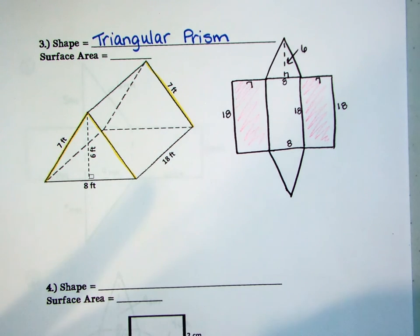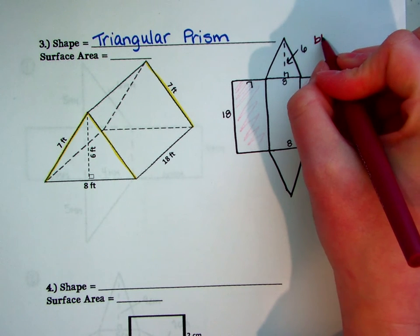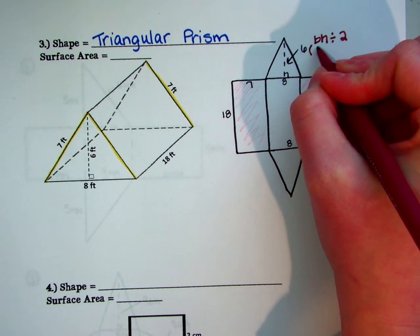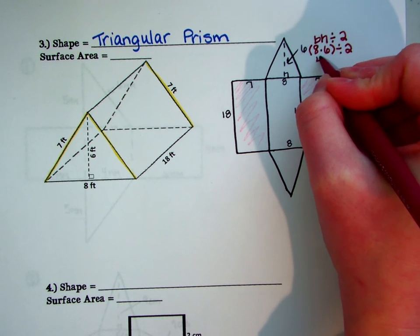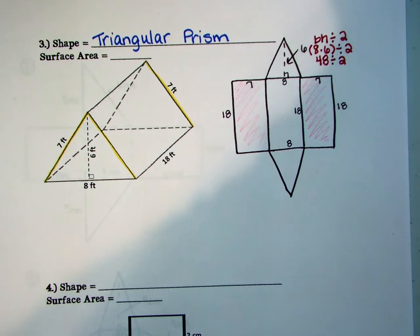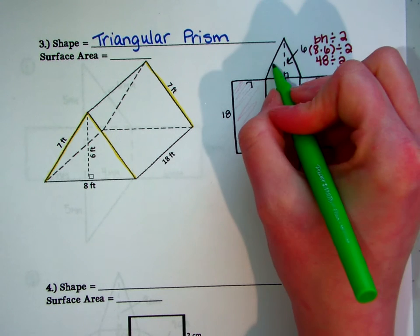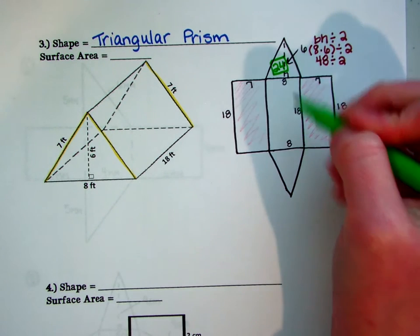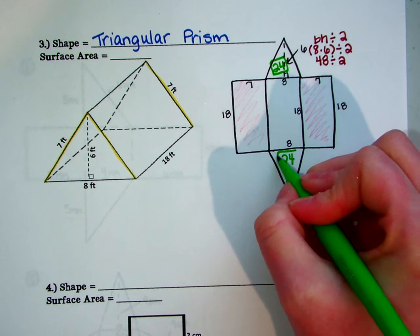So, how about we just find the area of the triangles first, because they're the hardest part. So, the formula for area of a triangle, again, base times height divided by 2. Base is 8, height is 6. Product of 8 and 6 divided by 2. The product of 8 and 6 is 48. Then we need to take half of that. Half of 48 is 24. And since the triangle down here, they're both the bases. They are identical. They're congruent. He is also going to be 24. I'm just going to go ahead and write it right there.